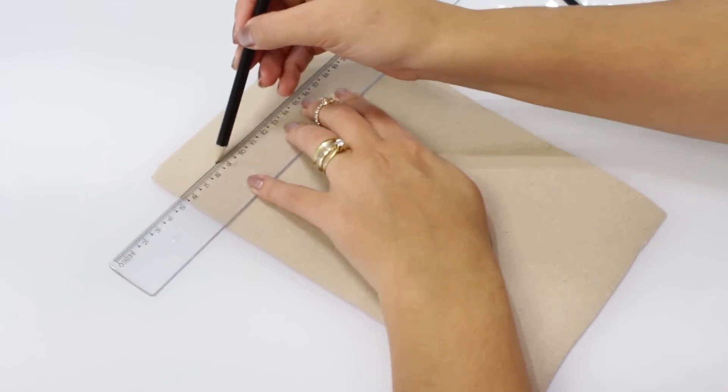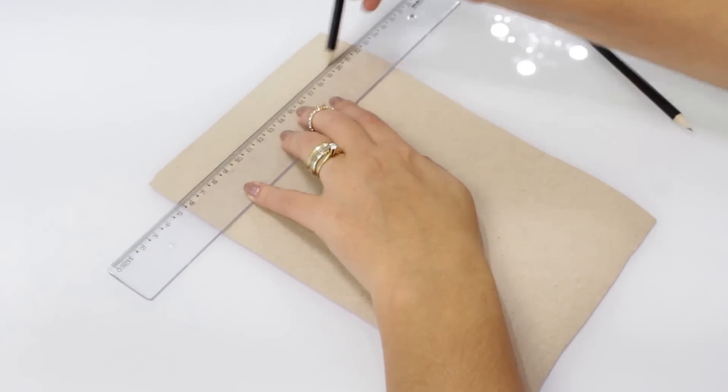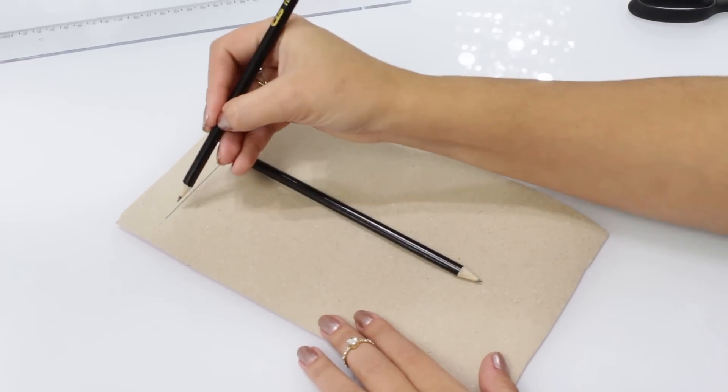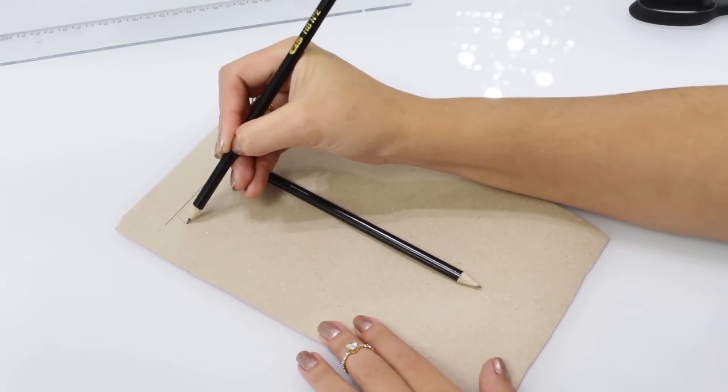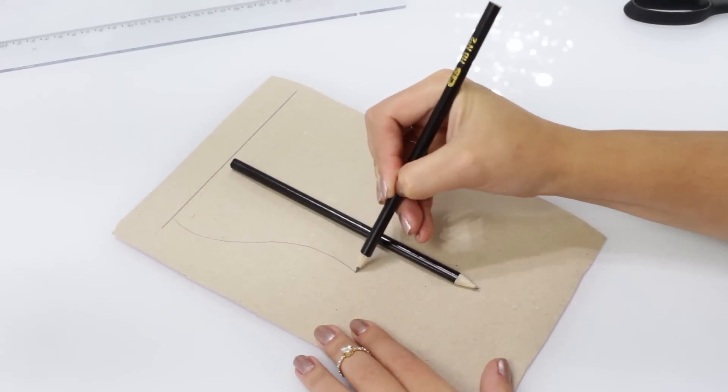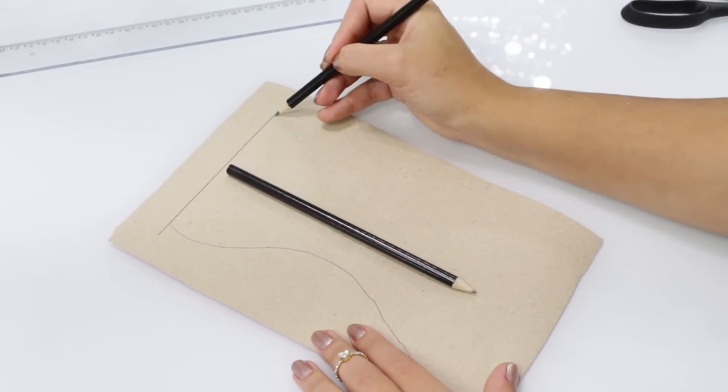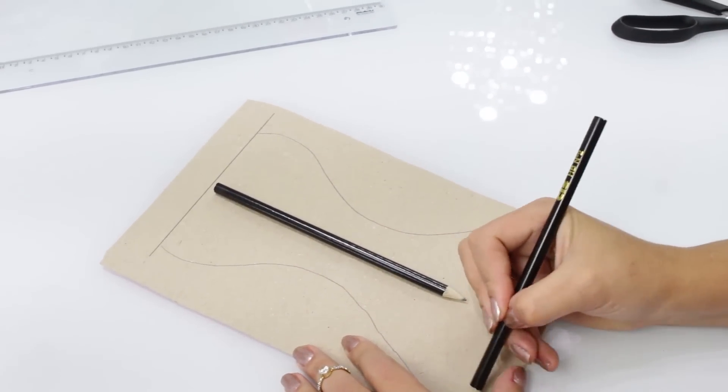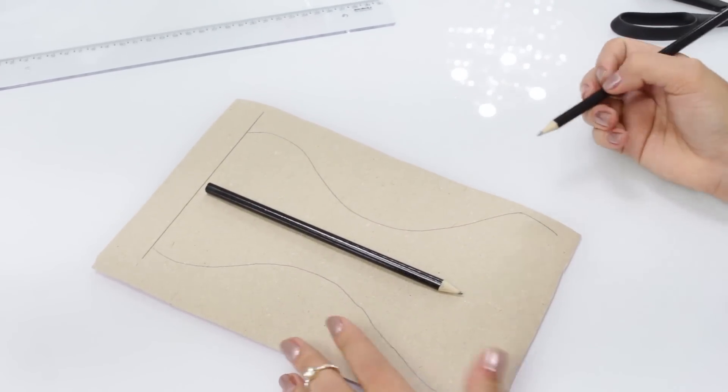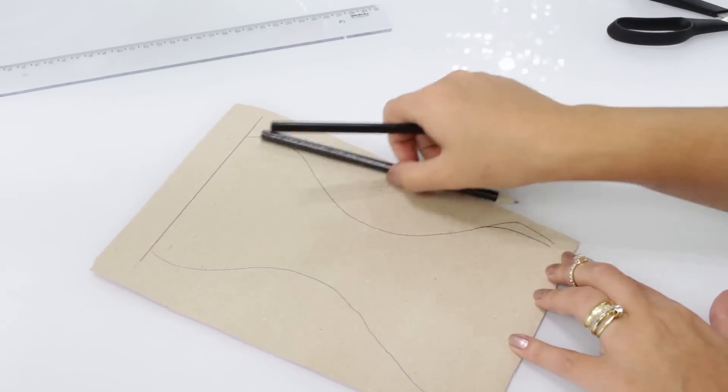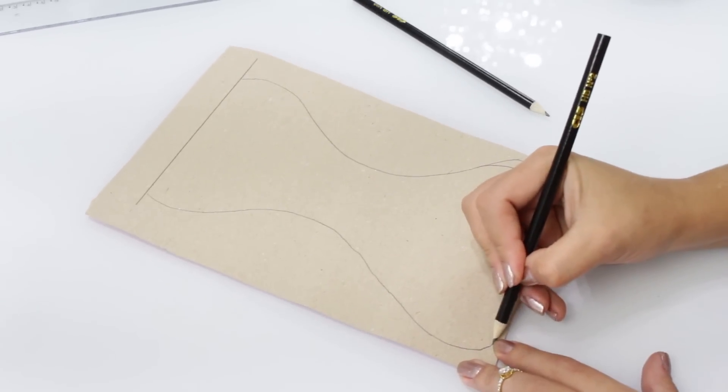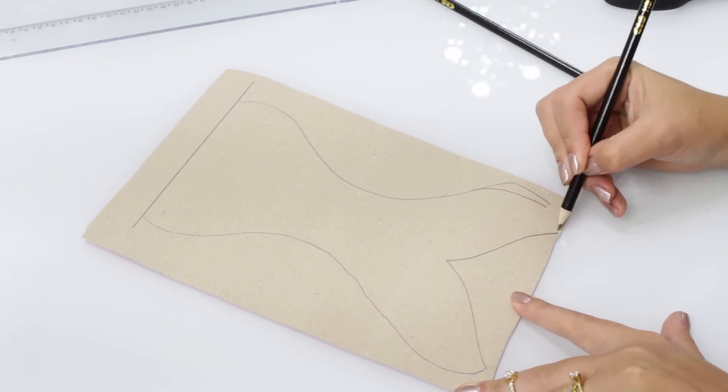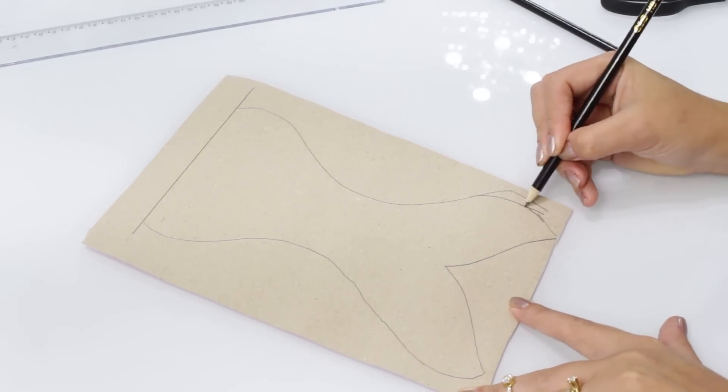Pra começar dessa vez, eu vou pegar minha régua e eu vou traçar uma reta que vai ser a parte de cima do meu estojo. Eu vou calcular mais ou menos o tamanho de um lápis. E eu vou fazer o formato de uma cauda de sereia. Eu fiz de olho mesmo. Mas se você quiser, você pode imprimir da internet pra usar como molde. Mas não tem muito segredo, também não precisa ficar tão certinho. Então eu fui fazendo de olho, dei uma erradinha, mas na hora de recortar a gente arruma. E só pra poder realmente fazer o molde de sereia pra poder cortar os dois lados do feltro da mesma forma.